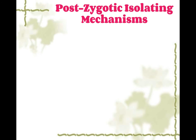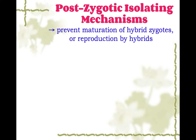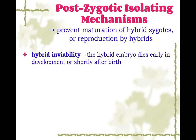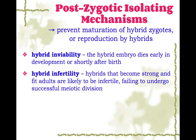Post-zygotic isolating mechanisms occur after the zygote has formed. Something prevents them from making a healthy hybrid organism that can reproduce — either preventing the hybrid zygote from maturing, or if the hybrid does live, it's unable to reproduce. The first mechanism is hybrid inviability: the zygote forms, but the hybrid embryo dies early in development or shortly after birth — it's just not viable. The next is hybrid infertility: some hybrids become strong and fit adults, but they are likely to be infertile and unable to undergo meiosis because of chromosome number issues.